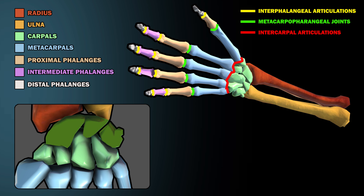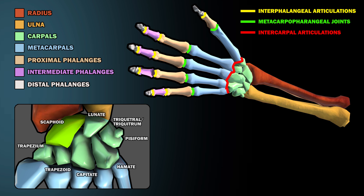The proximal row articulates the bones of the forearm. The proximal row includes the scaphoid, lunate, triquetral, and pisiform. The distal row includes the trapezium, the trapezoid, capitate, and hamate.